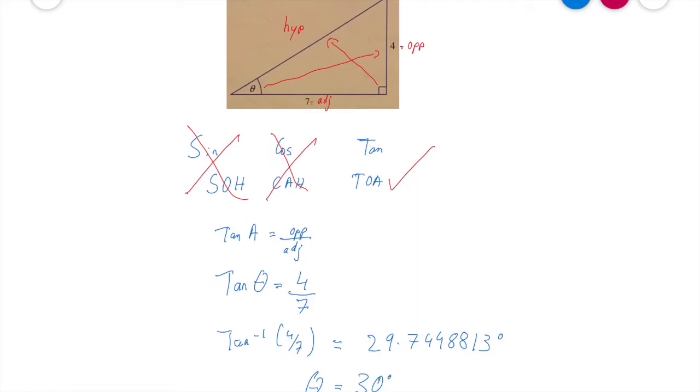So to recap on the steps there, the first thing that we're going to do, step one, is we're going to identify my hypotenuse, opposite, and adjacent in the triangle. Step two is we're going to decide if we need to use sine, cos, or tan.